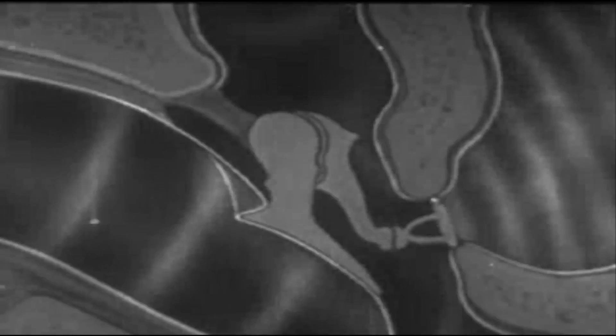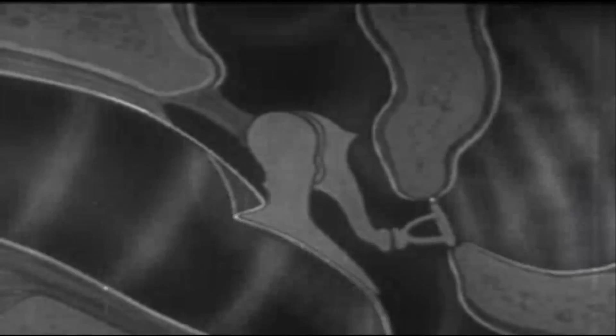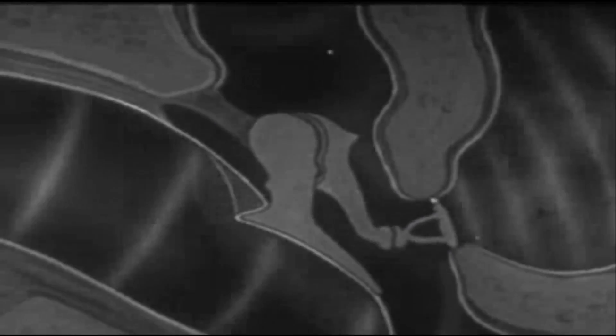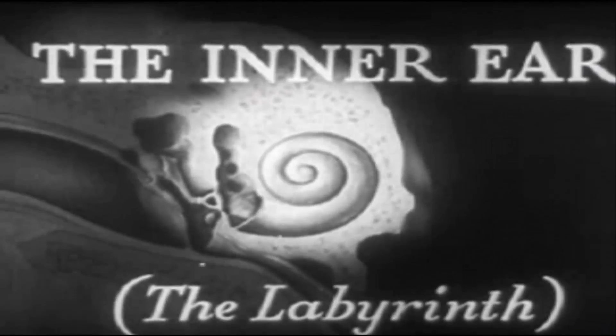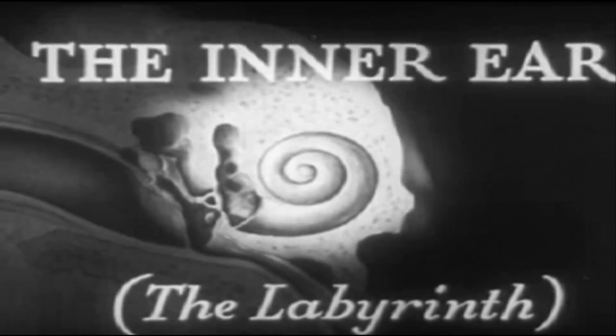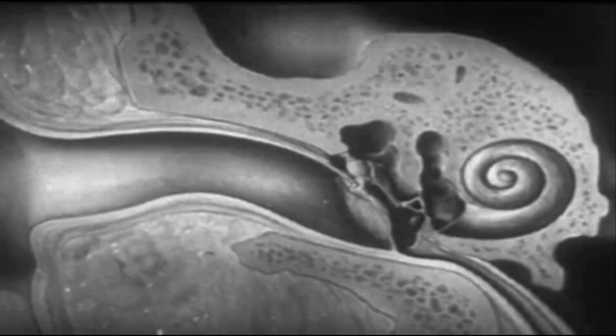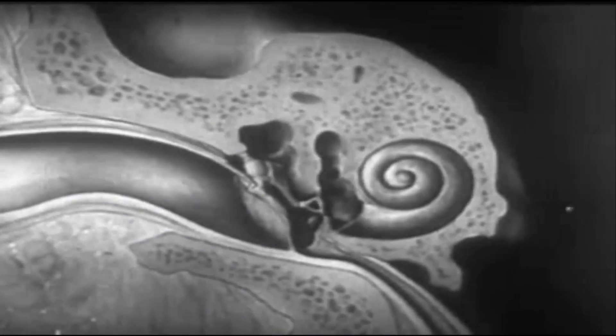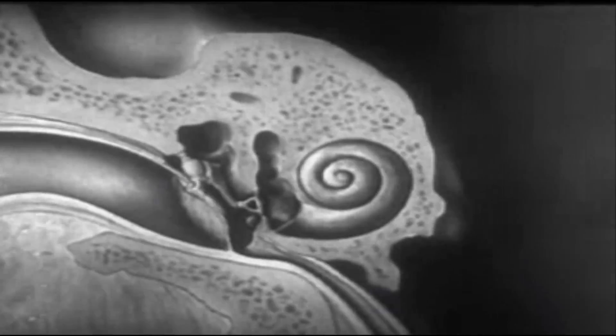And now let's see how sound waves coming from a ringing bell act upon the ear mechanism. Here we see in slow motion how these sound waves, by beating against the drum membrane, are carried across the middle ear to the inner ear by the chain of ossicles. The inner ear or labyrinth contains the minute but extraordinary mechanism, which finally converts sound waves into nerve impulses.